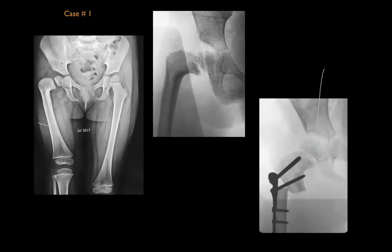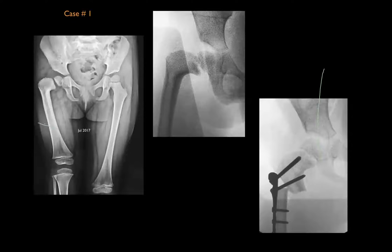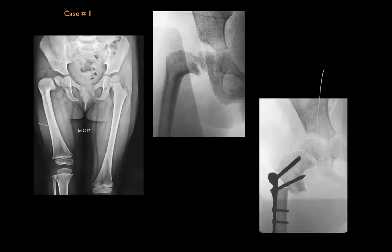Here is an illustrative case of coxa vara secondary to congenital femoral deficiency. No wedge is taken out — it is a subtrochanteric-level osteotomy. This osteotomy is not definitive for this condition, as subsequent lengthening will be needed. The proximal femur must be well aligned and any acetabular dysplasia corrected prior to lengthening. The osteotomy is performed prior to length equalization: a subtrochanteric transverse osteotomy with lateral translation.